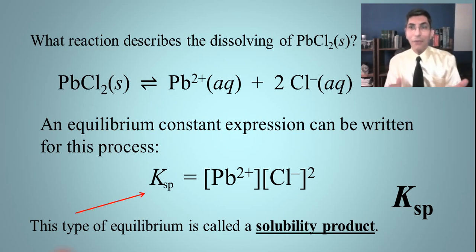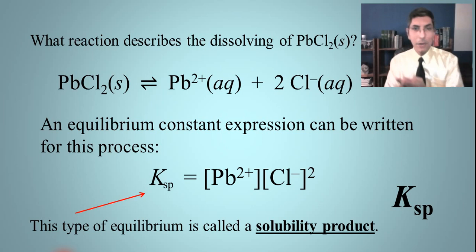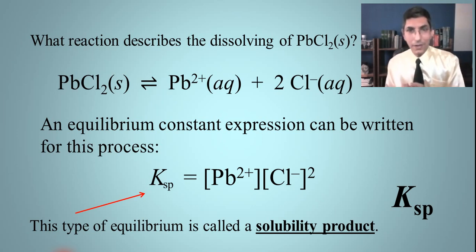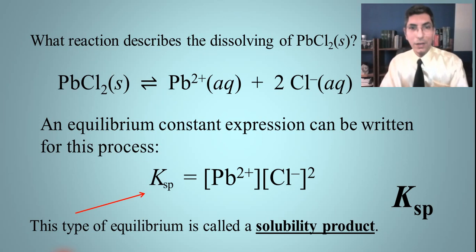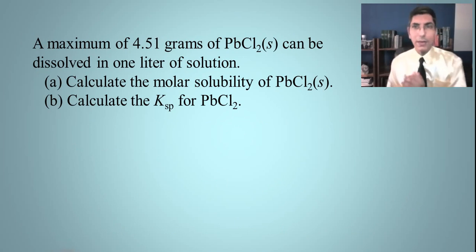Ksp adds to our alphabet of equilibrium constants — we've had Kc and Kp, and now we're adding Ksp. We'll be adding a few more in upcoming lessons when we talk about acids and bases. Let's work a problem with this.